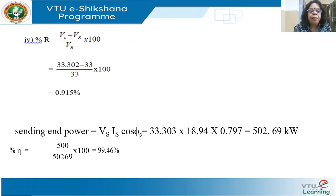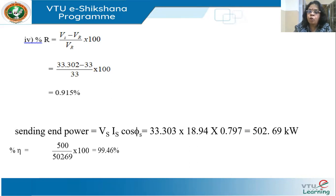The percentage voltage regulation is (VS − VR) / VR × 100 = (33.302 − 33) / 33 = 0.915%. This is excellent regulation. For short lines, because line length and voltage drop are less, the regulation will be very good.